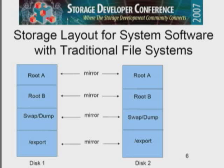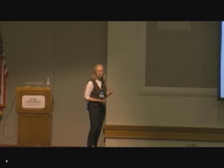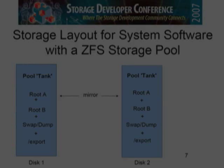Traditionally, this is the way you would have laid out your system if you wanted to manage a couple of different bootable environments on a disk — and of course you might have multiple disks, but this is just a simplification. You would have a root file system, maybe another copy of the root file system so that you could have one to operate on, one to upgrade, and swap between them. You'd have some space carved up for your swap and your dump, and then your data out there in a separate slice. Each one of those would be individually mirrored. With ZFS, they all just fall into one pool and you mirror the whole pool. So you have root A, another root B — you could have root C, D, and E.